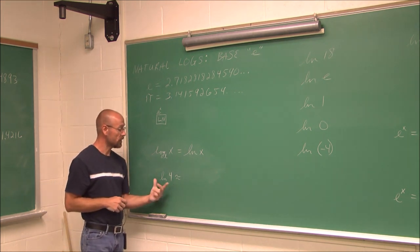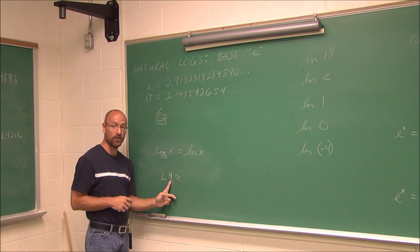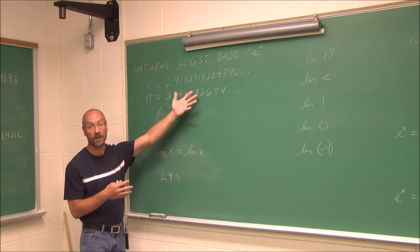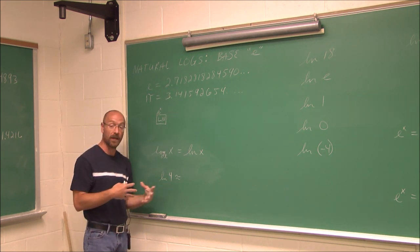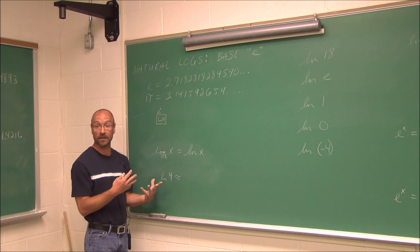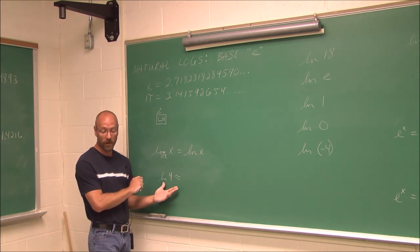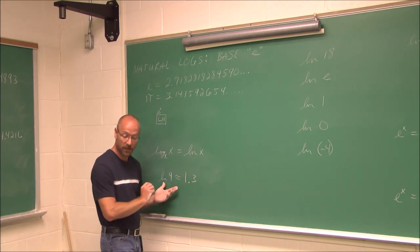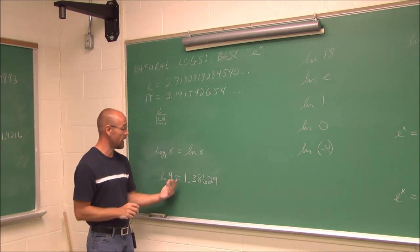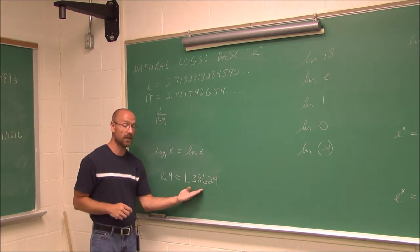Let's find ln of 4. Since e is about 2.7, raising 2.7 to the first power gives 2.7, so this value will be more than 1 but probably less than 2. Plugging into a calculator, I get approximately 1.38629. Plug this into your calculator and you should get a similar value.